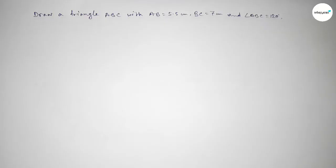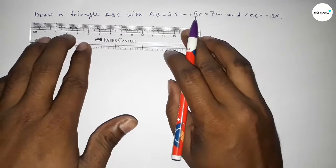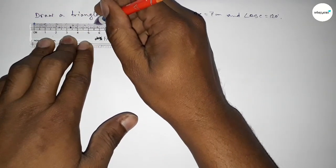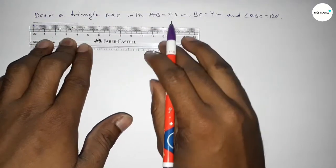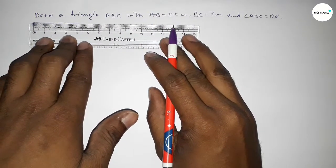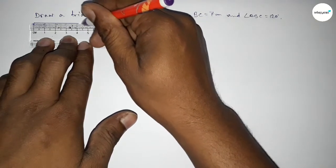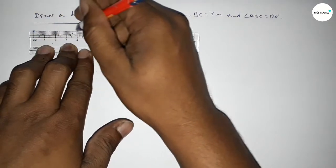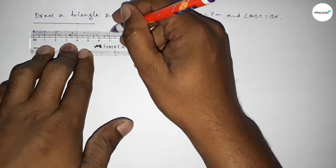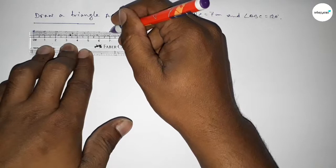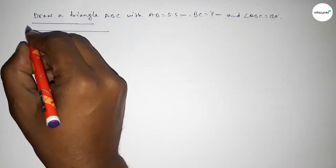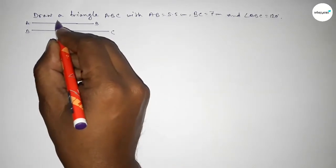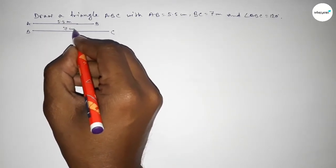Let's start the video. First of all, we are drawing two lines — one line of length 5.5 centimeter, which is line AB, and another line of length 7 centimeter, which is line BC.